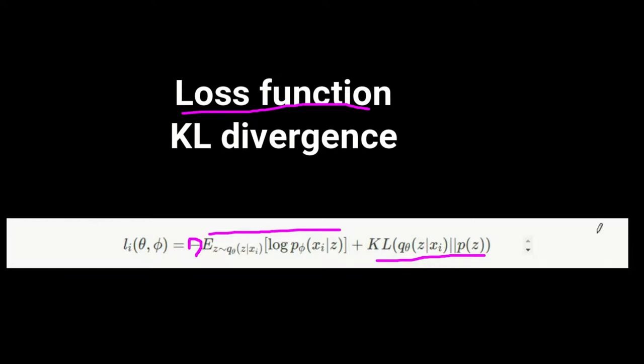The second term is a regularizer that we throw in. This divergence measures how much information is lost when using q bar to represent p bar in this case. It is a measure of how close q bar is to p bar. We train the variational autoencoder using gradient descent to optimize the loss with respect to parameters of the encoder and decoder.